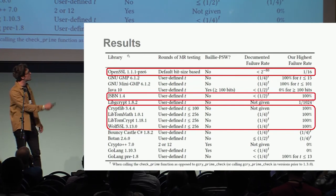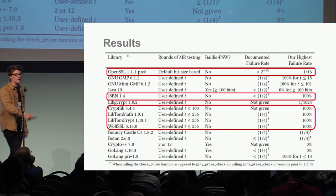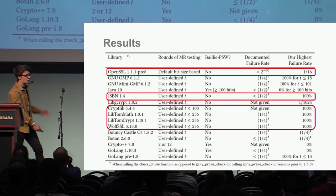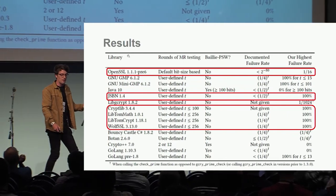We can see OpenSSL highlighted, with one in 16 times. We also have some 100% failure rates for GMP and some other libraries like JSBN, CryptoLib, LibTomMath, and WolfSSL.